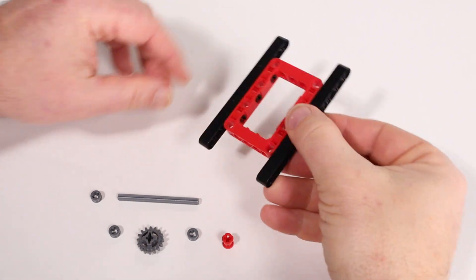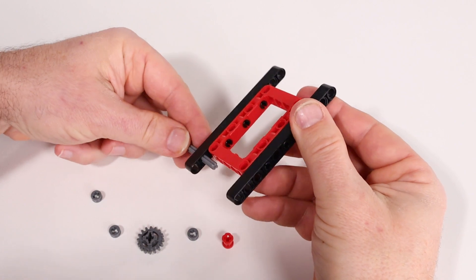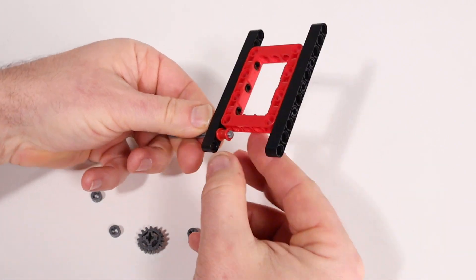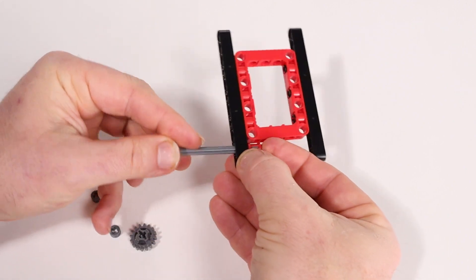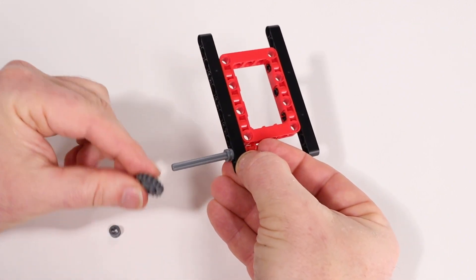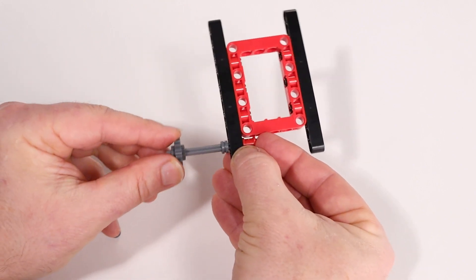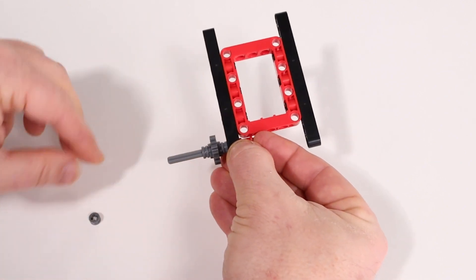Next we'll add the front axles. Slide the axle into the second hole of the 11 hole beam. Place the large red bushing on the end inside the frame. Then add a half size bushing and slide it all the way onto the axle, followed by a small gear and another small bushing. Make sure to press them all together tight.